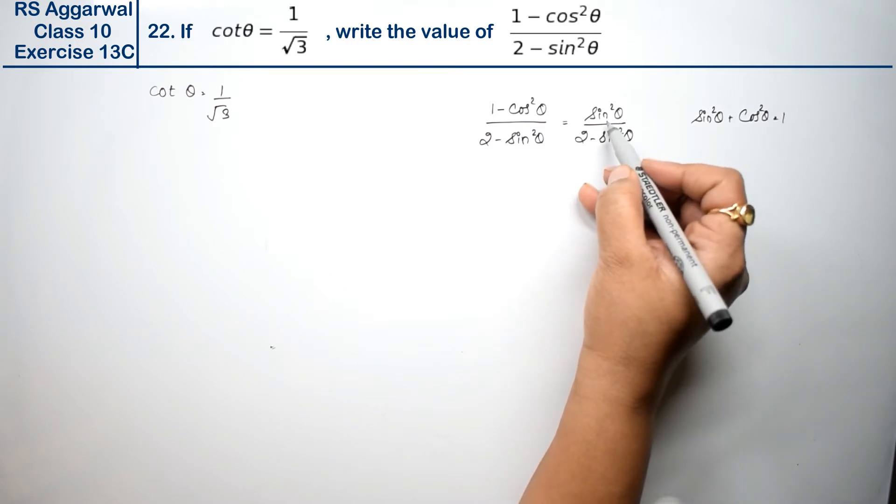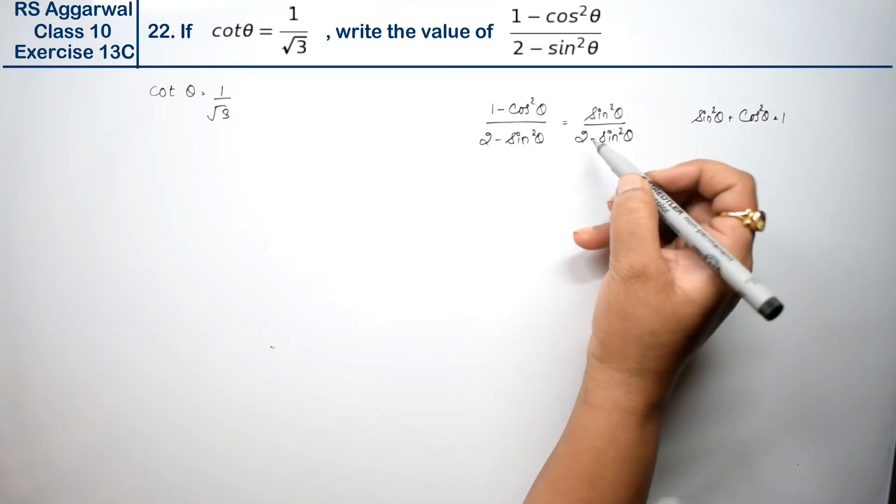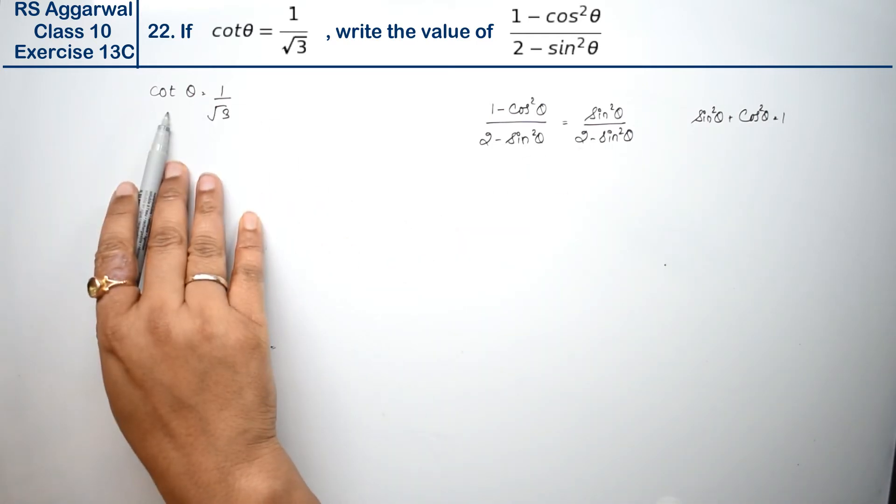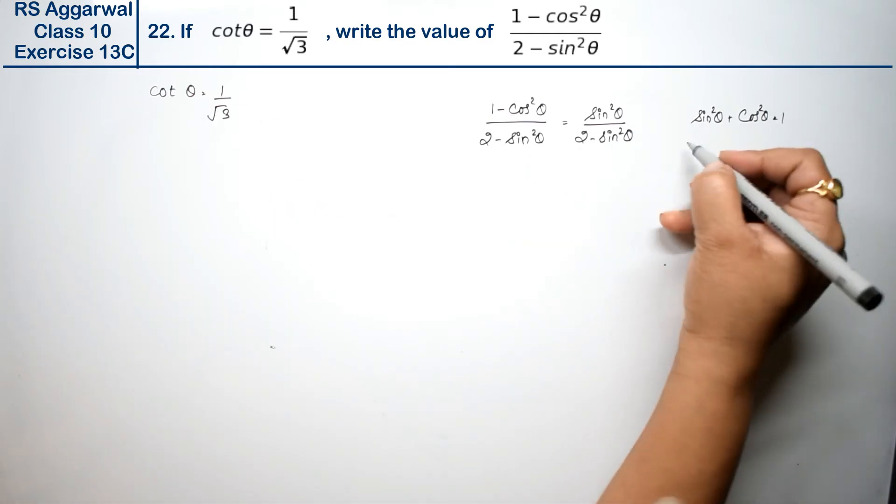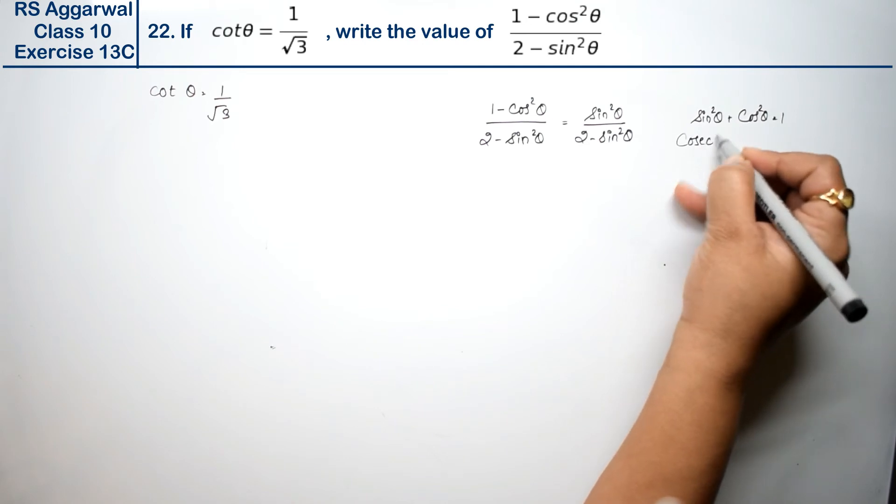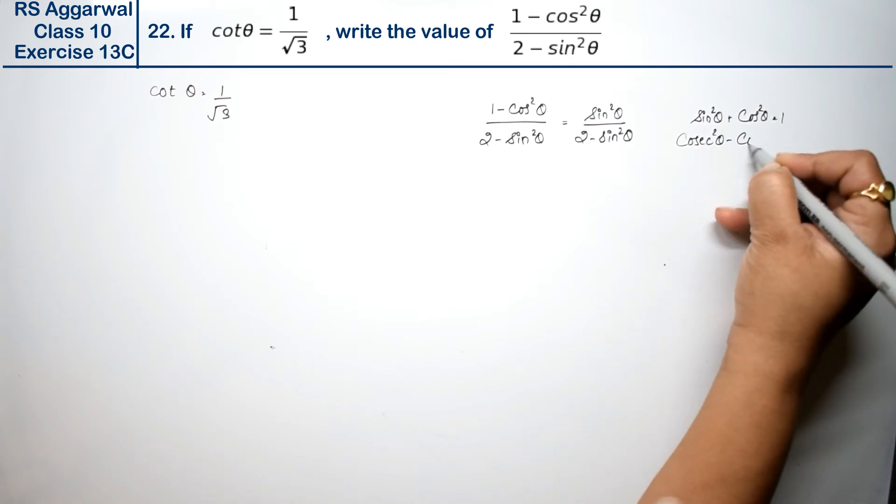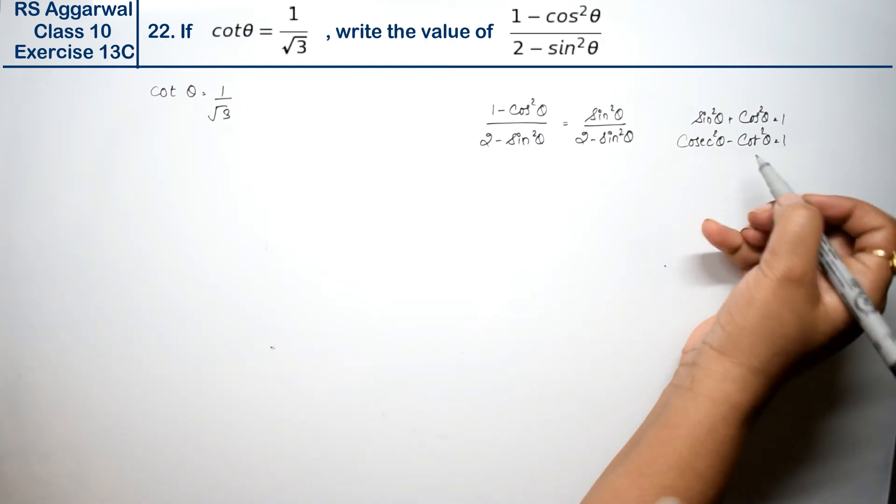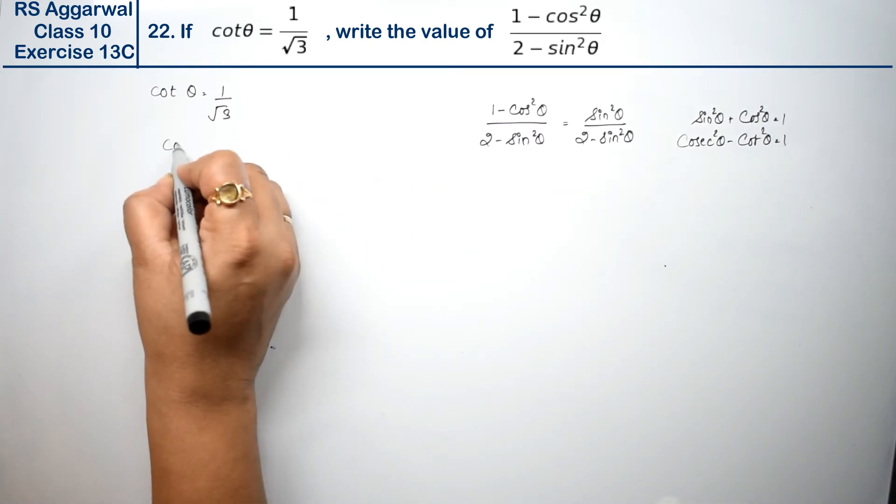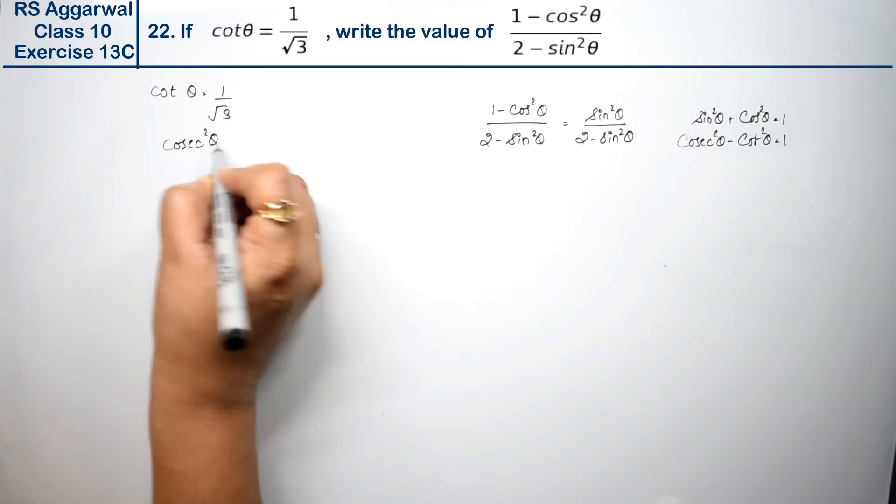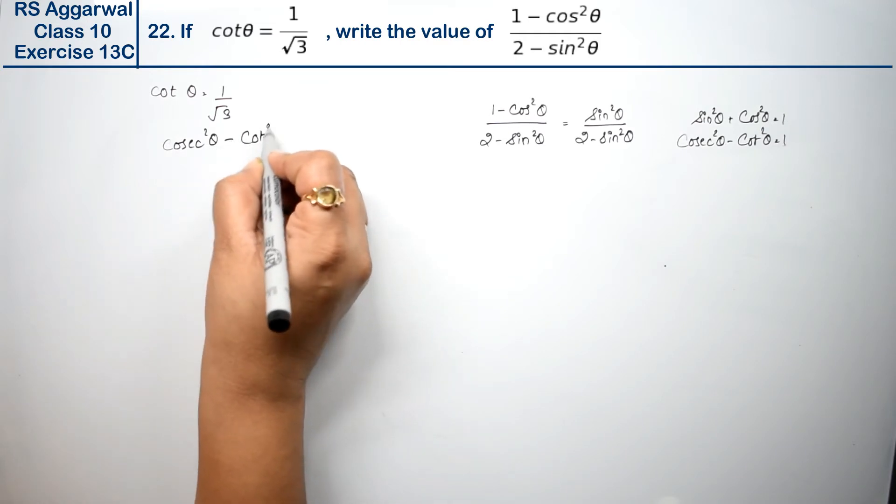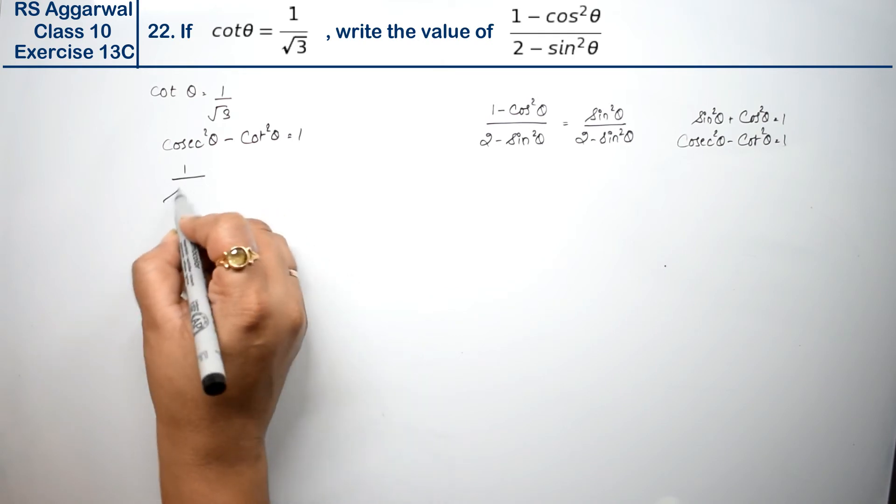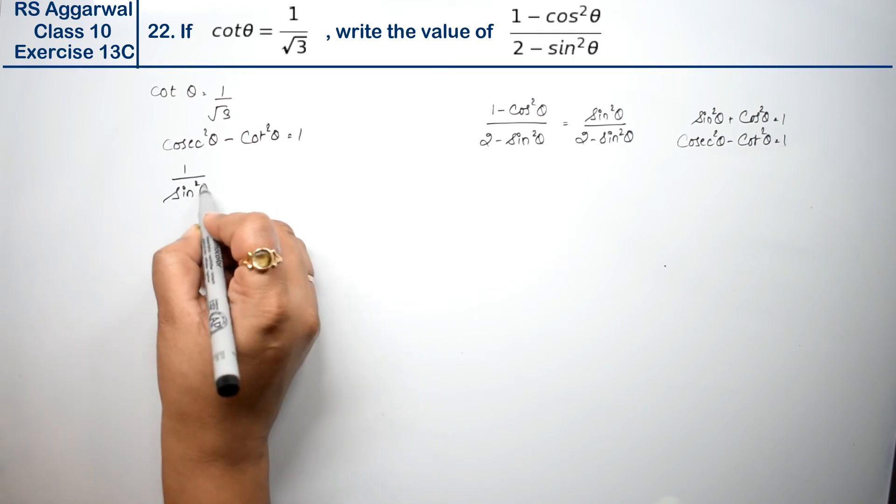Let's change it to cosecant form. Why? Because we know the cotangent identity: cosec²θ - cot²θ = 1. Now let's solve using this identity. We can write it in cosecant as 1/sin²θ, right?